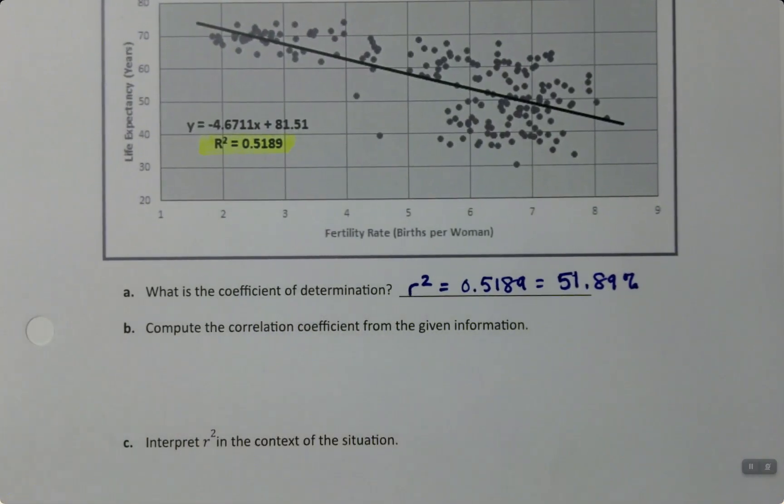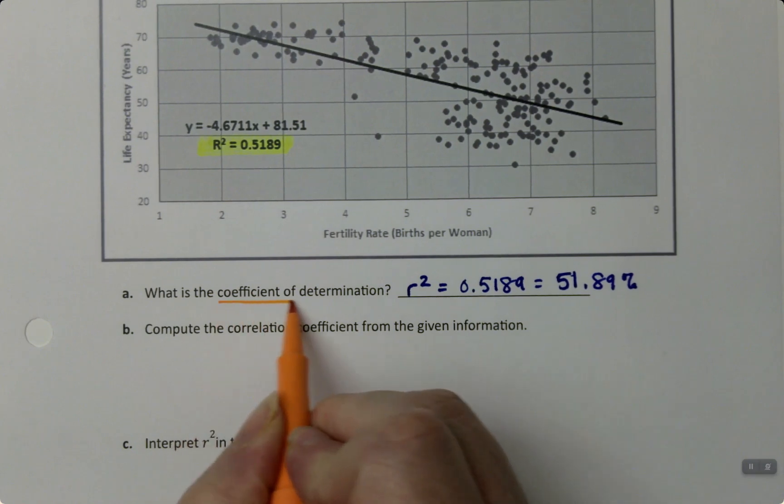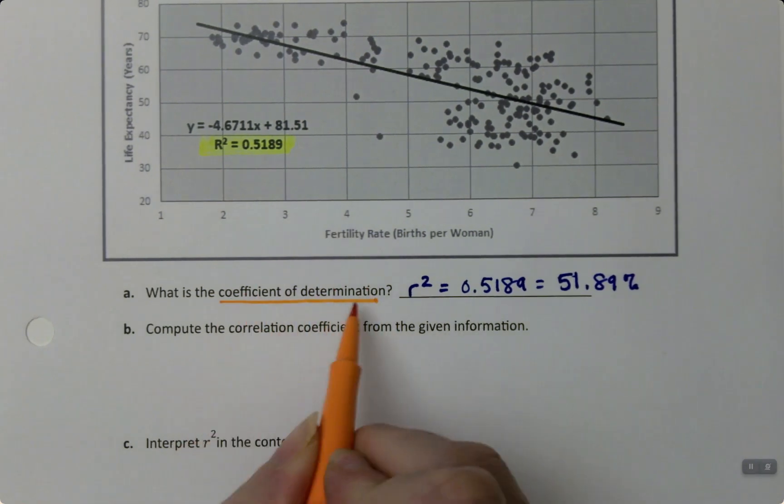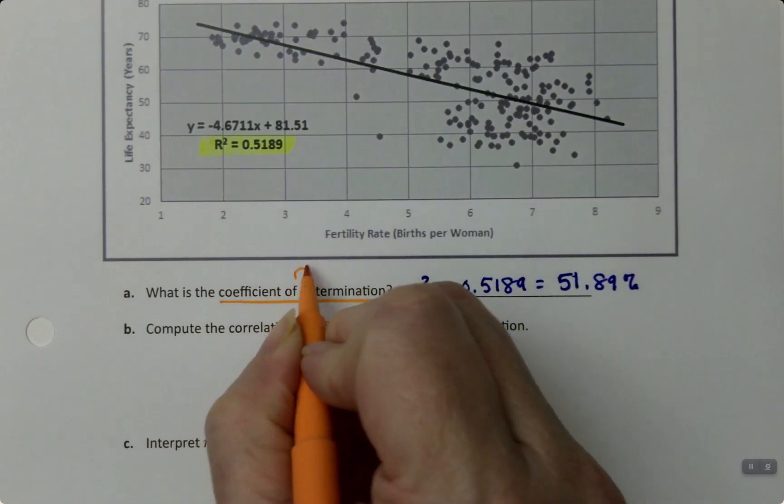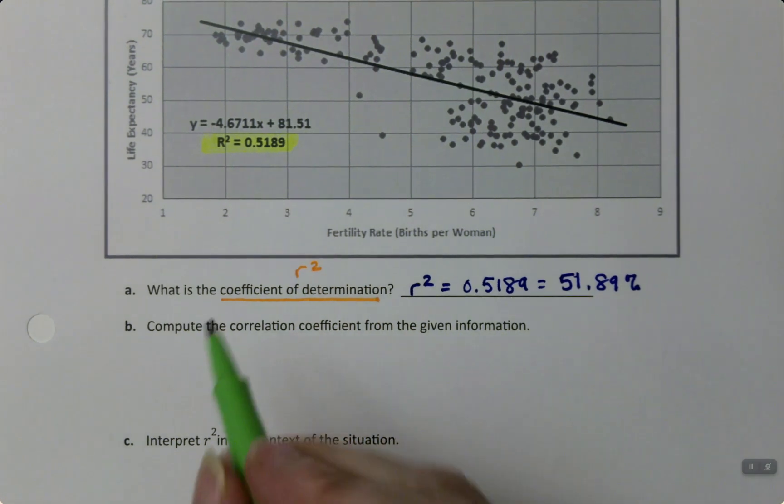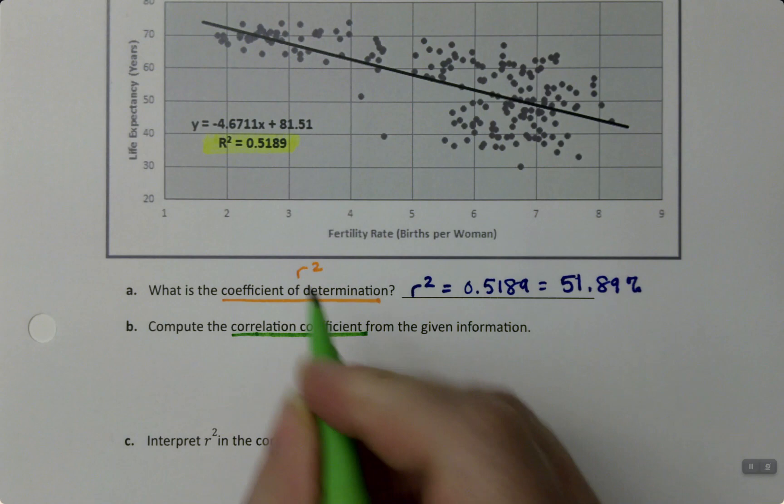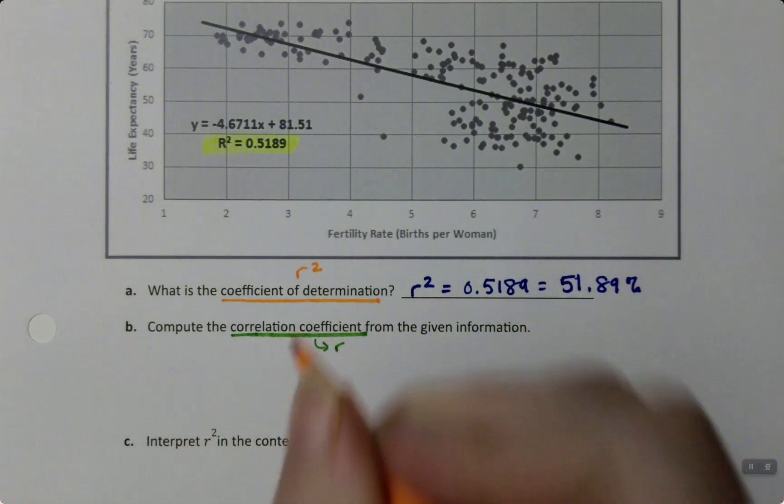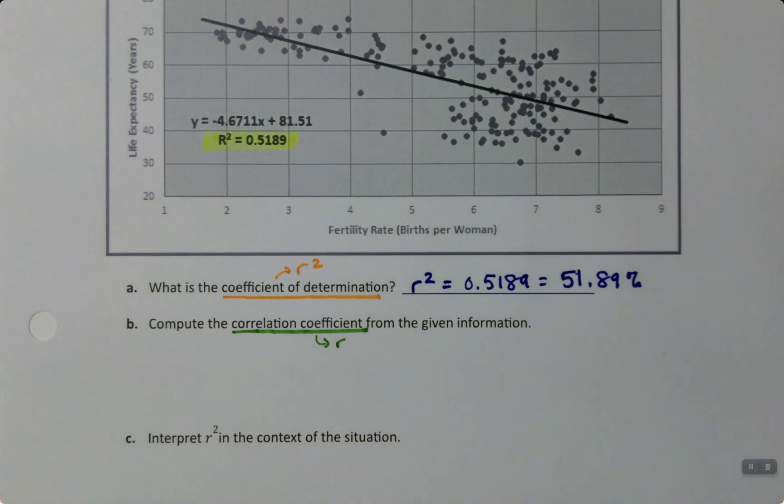Coefficient of determination - never want to forget, these always get confusing because they both have the word coefficient in them. Coefficient of determination is R-squared. Now they want us to compute the correlation coefficient. That's R, not R-squared. So you want to keep those two terms straight in your head.